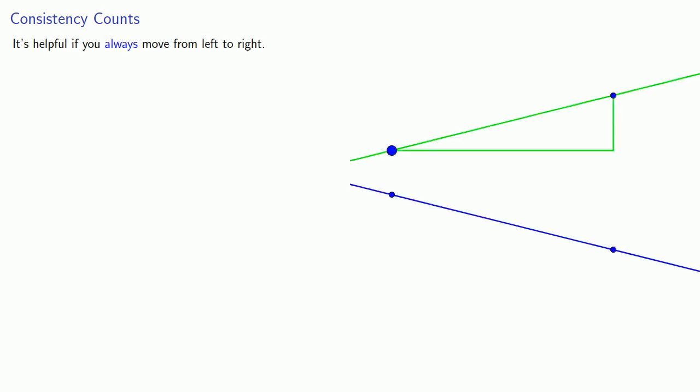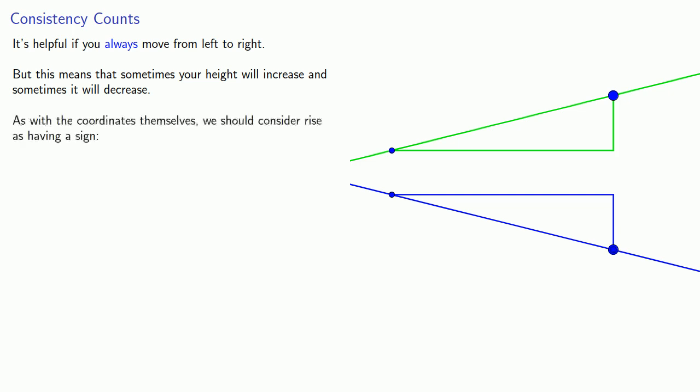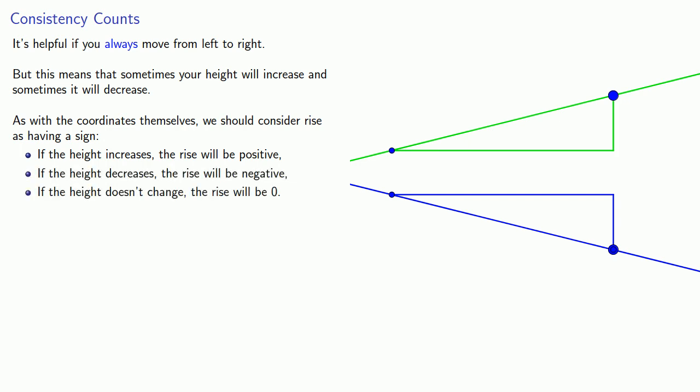It's helpful if you always move from left to right. But that means that sometimes our height will increase and sometimes it will decrease. As with the coordinates themselves, we should consider rise as having a sign. If the height increases, the rise will be positive. If the height decreases, the rise will be negative. If the height doesn't change, the rise will be 0. As long as you keep in mind how far you've gone is always end minus beginning, the signs will take care of themselves.